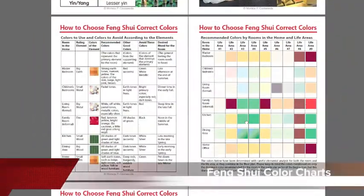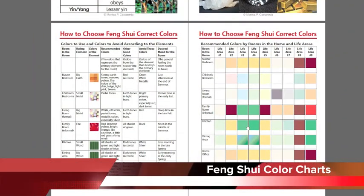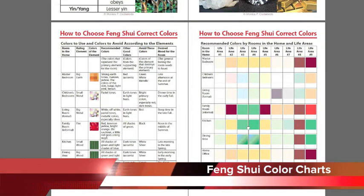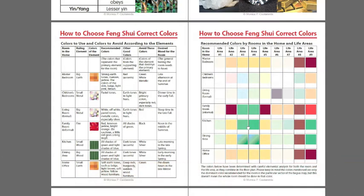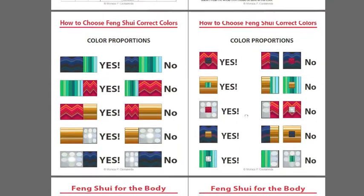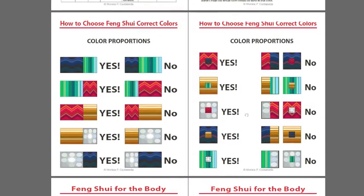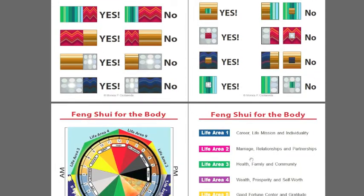You also get a lot of information on the colors for the five elements — very complete charts showing how you use the five elements in Feng Shui. I have also included charts on how to choose Feng Shui correct colors by the room in the home, and also a chart with suggested colors by combining the room with the life area it is located in, according to the Bagua Map. Color proportions — what is accepted and what is not accepted in Feng Shui — are really easy to understand.